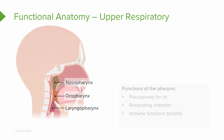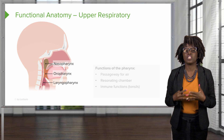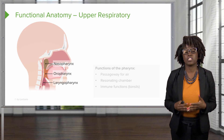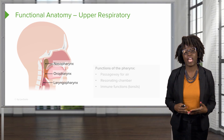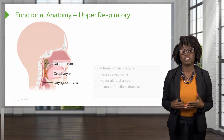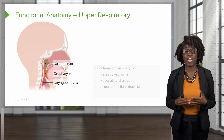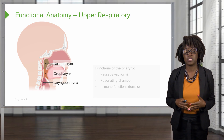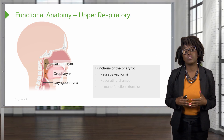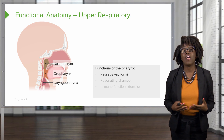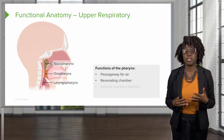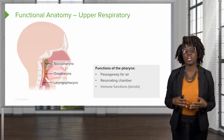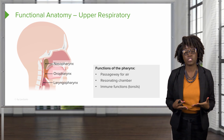The third structure of the upper respiratory system is the pharynx, which we call the throat. The pharynx is divided into three different sections: the nasopharynx, which is the part behind the nasal cavity; the oropharynx, which is the part behind the oral cavity; and the laryngopharynx, the part connected to the larynx. The pharynx serves as a passageway for air, a resonating chamber for sound, and also has some immune functions, such as the tonsils.